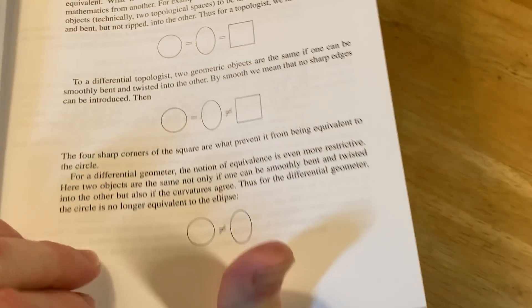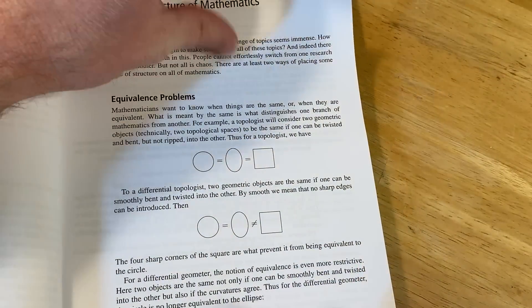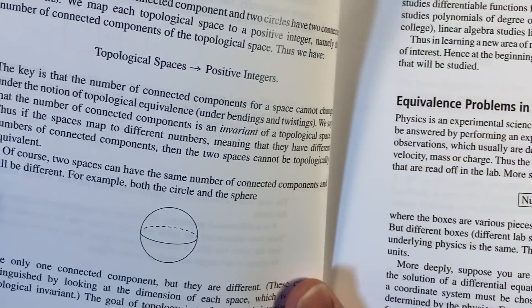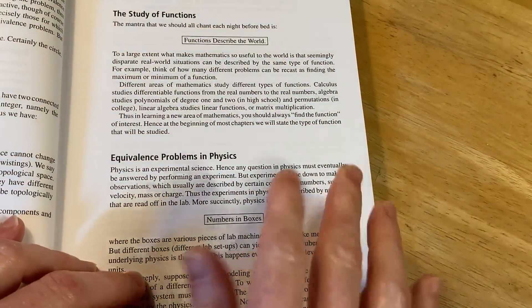To a differential topologist, two geometric objects are the same if one can be smoothly bent and twisted into the other. By smoothly, we mean that no sharp edges can be introduced. Then we have the following. Yeah, pretty cool. And then here we go. It talks about the differential geometry. And then there's more, right? There's more that's really cool. It talks about topological spaces, equivalence problems, functions, equivalence problems in physics.